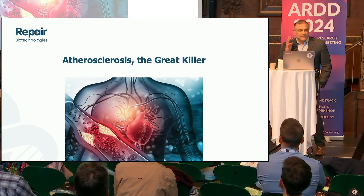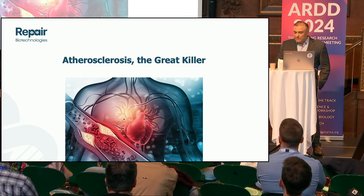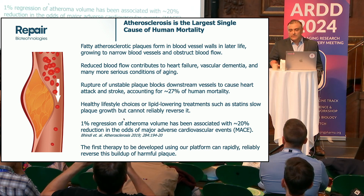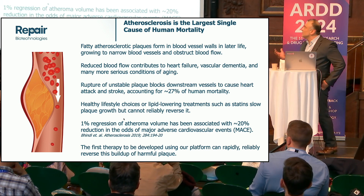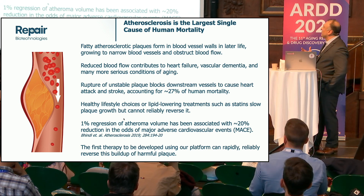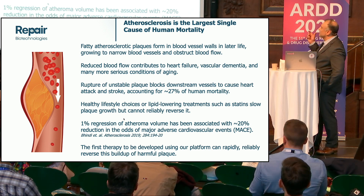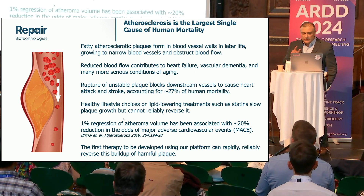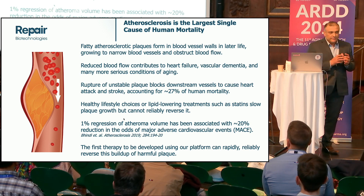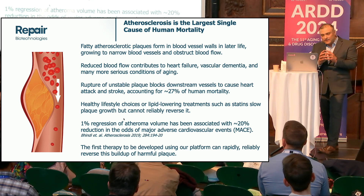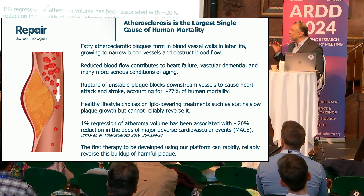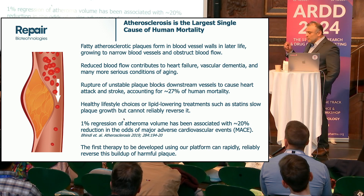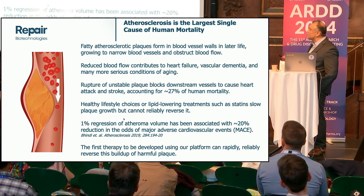Atherosclerosis is the great killer. It is the fatty atherosclerotic plaques that develop in our blood vessels, and as they grow, they impede blood flow to vital organs such as the heart. We can develop ischemic heart disease, vascular dementia, and numerous other conditions associated with aging. More importantly, the rupture of unstable plaque is the biggest concern. An unstable plaque is a large plaque with a very thin fibrous cap — very cholesterol-rich and prone to rupture. When they rupture, this can lead to heart attack and stroke, accounting for approximately 27% of human mortality.